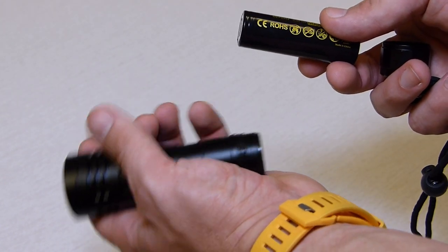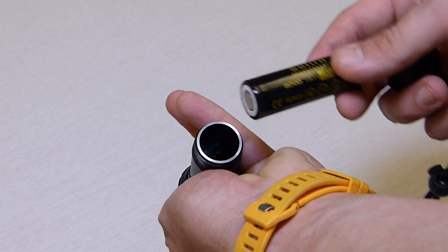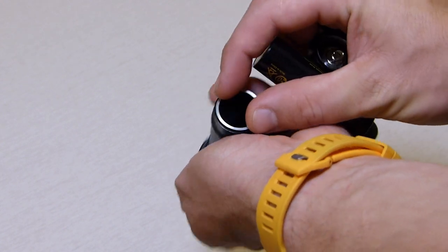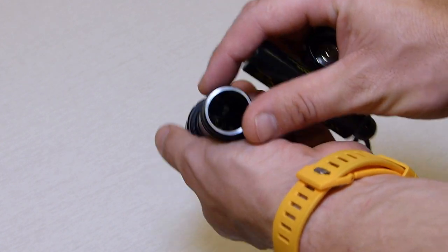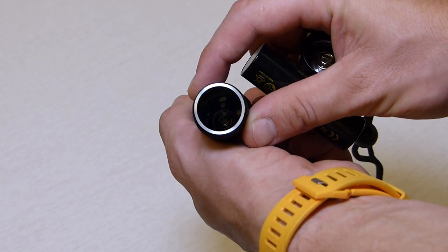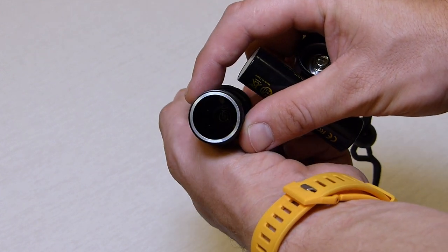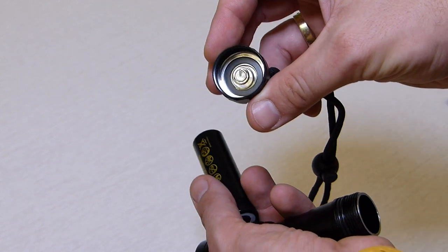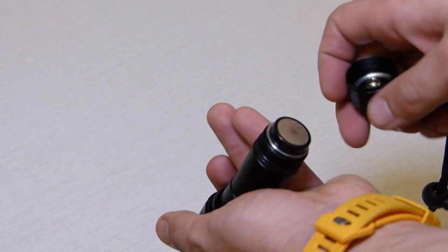So you can also use 18650s within the light. It also comes with an adapter, but you don't have to use the adapter. So we have springs in there, those gold-plated, very massive springs that are obviously of good quality.